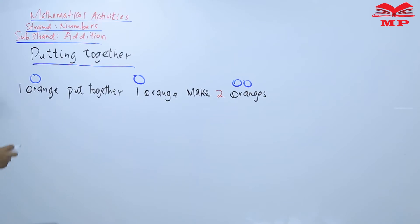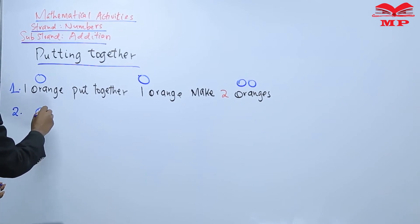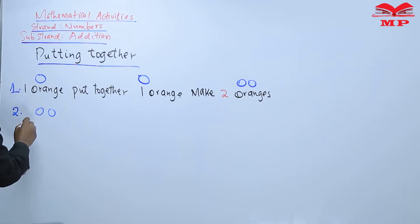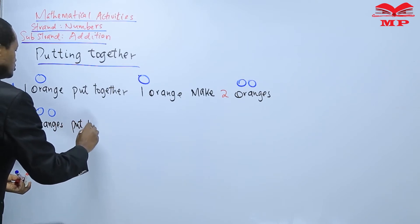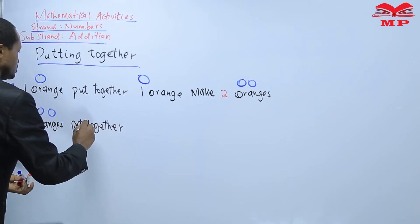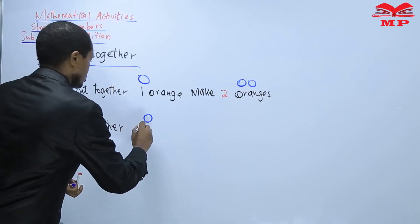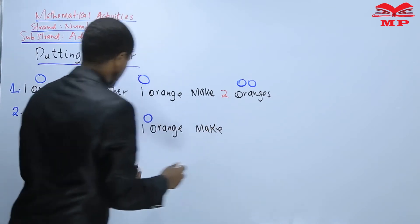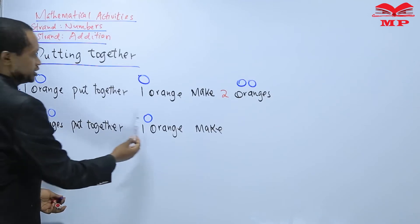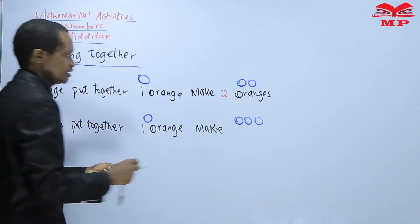That is one example. Then number two — you can still use oranges. Two oranges put together one orange. When you put together two and one, that will give us three oranges.